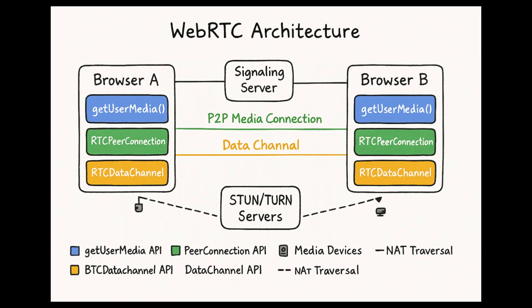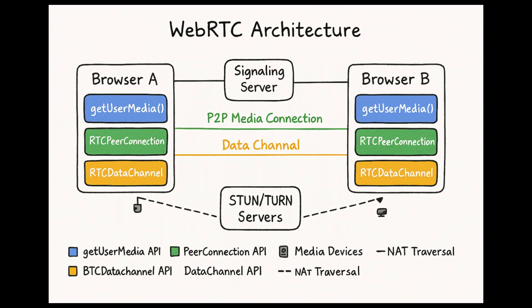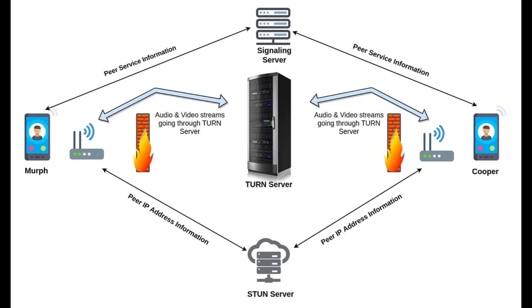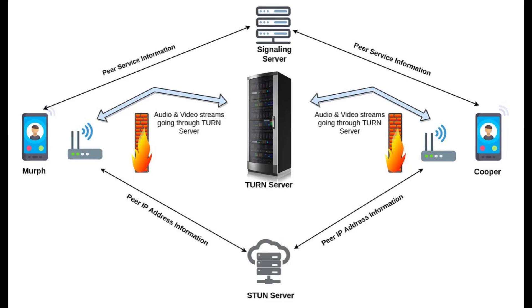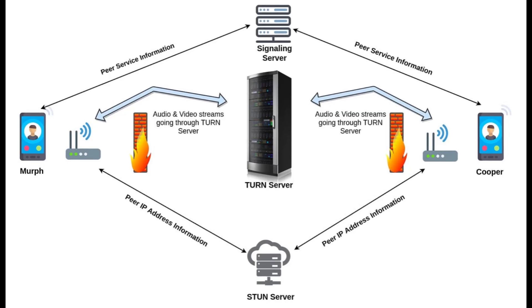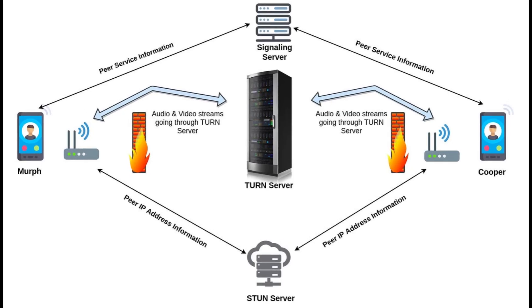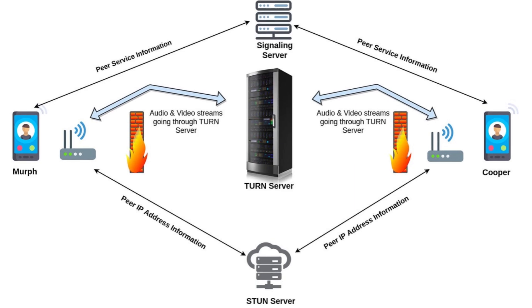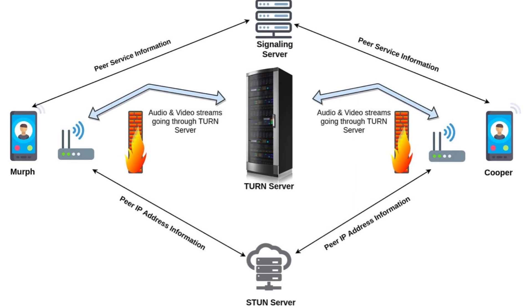If both users are on simple networks, it just works. If not, WebRDC uses helper servers called STUN and TURN to figure out addresses and relay traffic when needed.